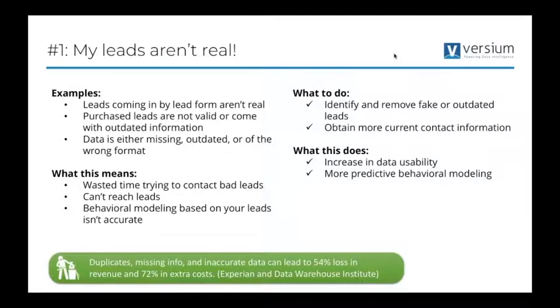What can we do? The APIs can be used to help identify and remove fake or outdated leads and obtain more current contact information. What it does is it effectively increases the effectiveness of your team, and it allows you to have a better understanding of your behavioral modeling of who your ideal customer is based on that inbound activity. Having duplicate or missing info or inaccurate information in a CRM, on a spreadsheet, in a marketing automation tool, can lead to an exorbitant amount of revenue loss and extra cost.